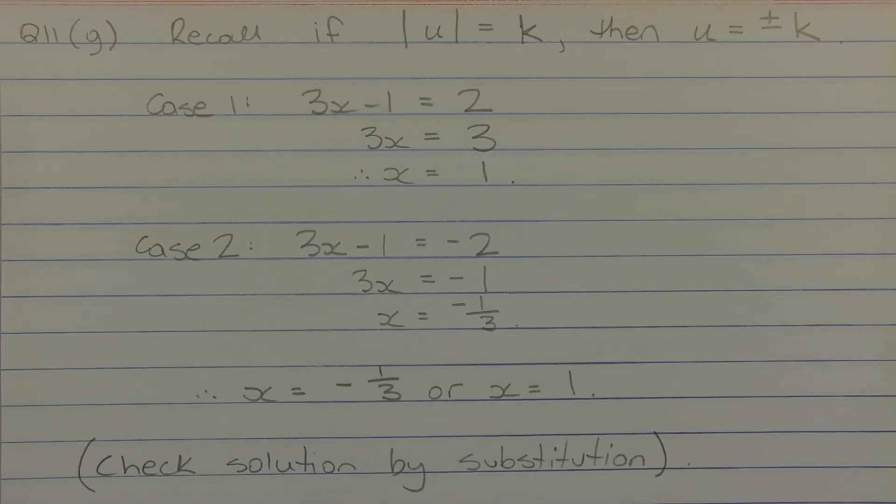This gives rise to two cases. In case one, 3x minus 1 could equal positive 2. Solving this equation, we add 1 to both sides and get 3x equals 3. Dividing both sides by 3, we get x equals 1.